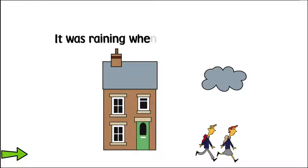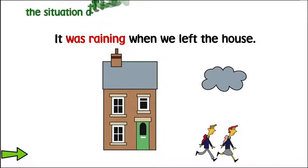It was raining when we left the house. We also use the past continuous to describe the situation at the start of a story.